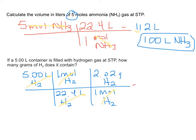5 times 2.02 divided by 22.4, and we need to be sure to round our answer to three sig figs. So we're going to end up with 0.451 grams of hydrogen.